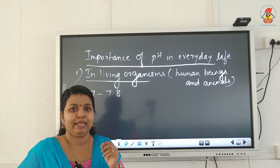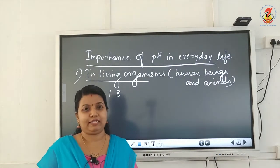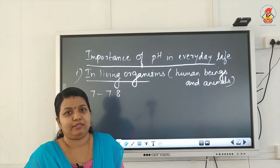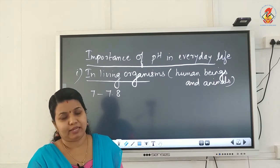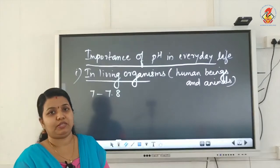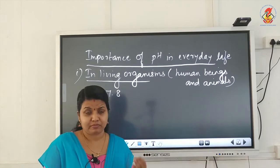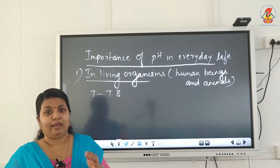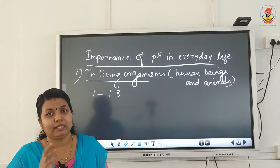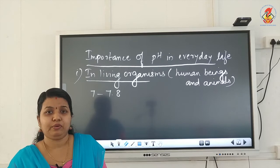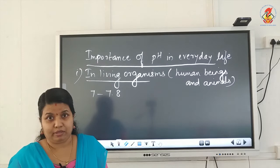The normal pH value of our blood is 7 to 7.8. Any variation from this normal value indicates a disease condition and it has to be treated medically. Similarly, animals also have their body working within a pH range of 7 to 7.8. For aquatic animals living in water, the pH value preferred is 7 to 7.8. If there is variation in pH, their life becomes a threat.